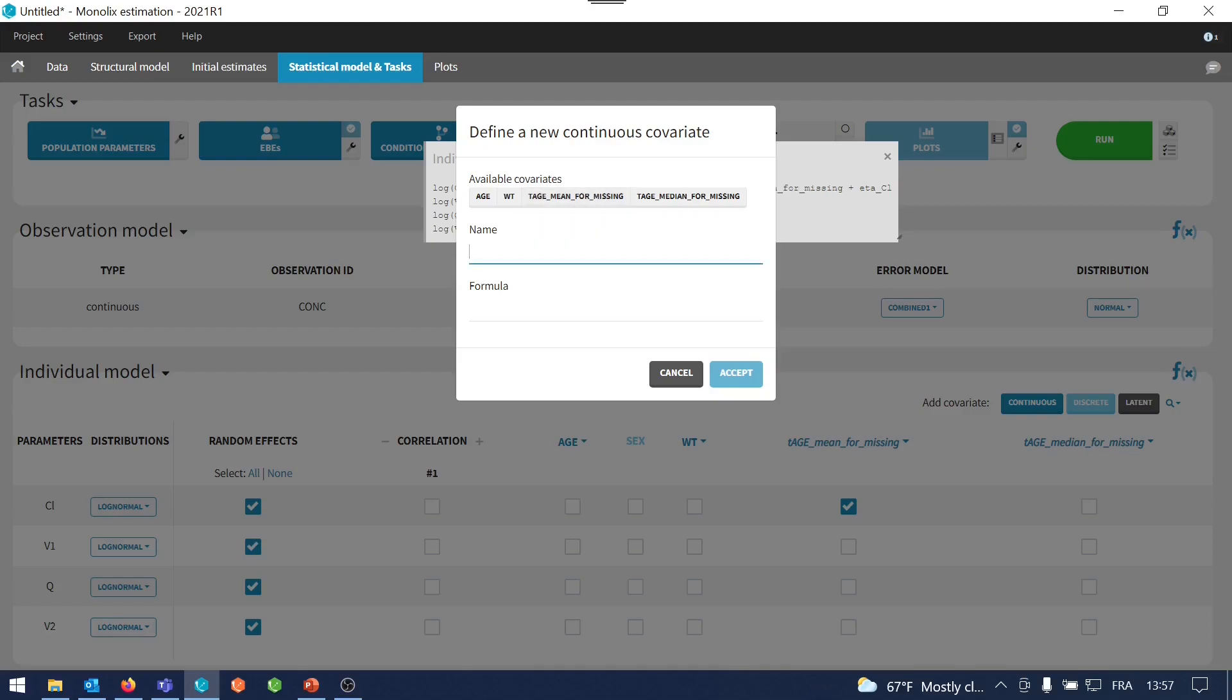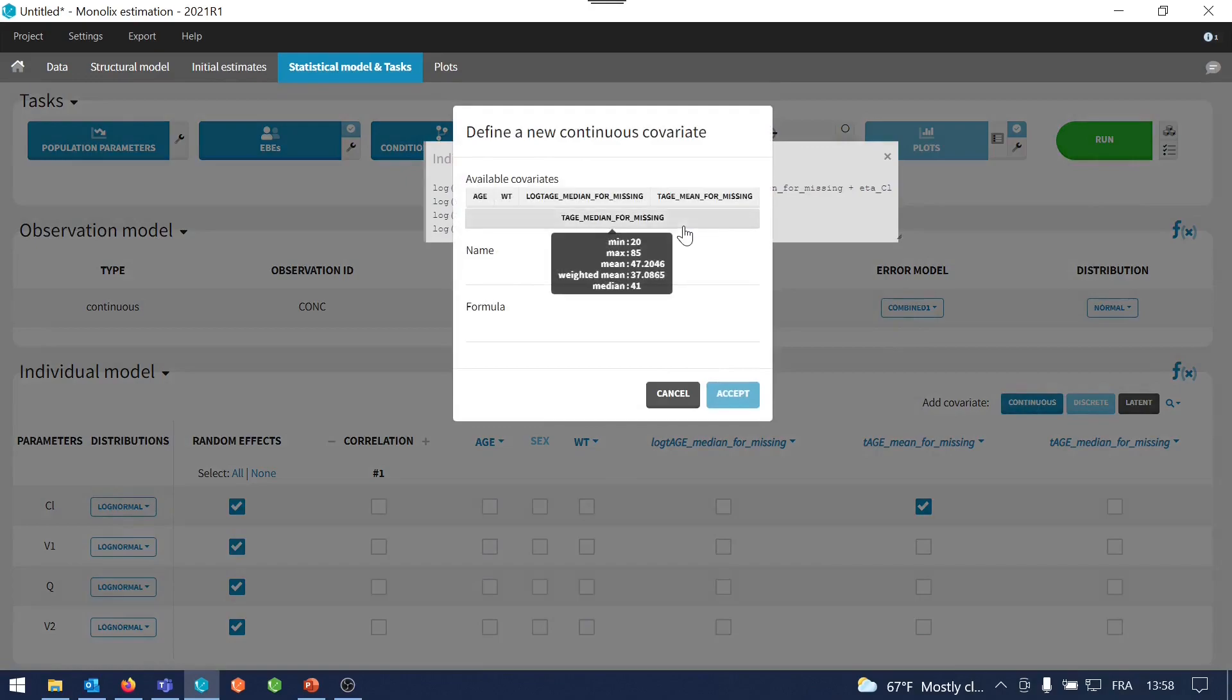I will create the log transformed age in case I use median for missing values. And I type log of my covariate divided by 31. And I will do the same in case I use the mean for missing values. So log transformed age mean for missing.